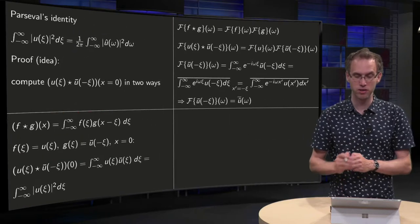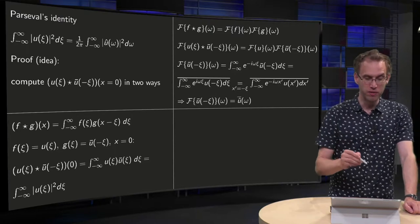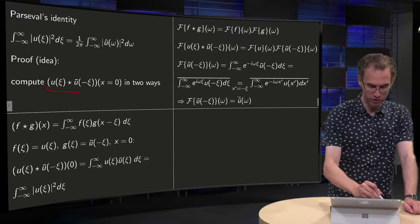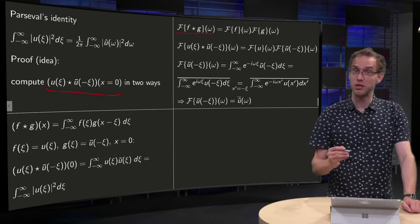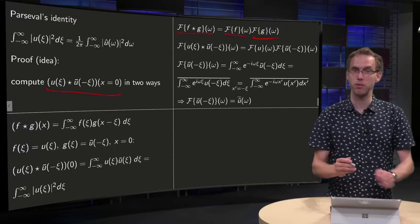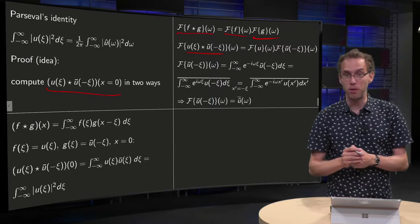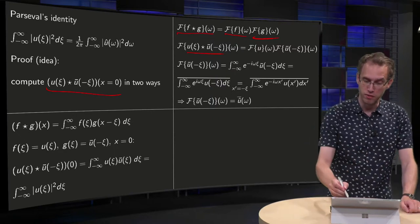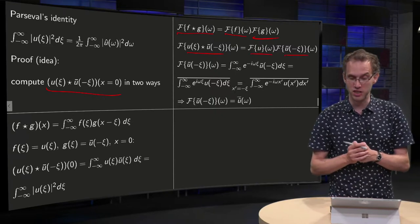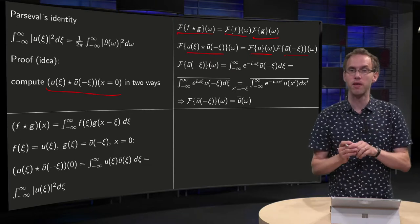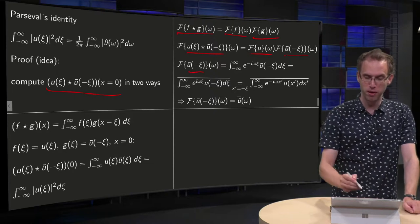Now for the right-hand side, we first compute the Fourier transform of this convolution. The Fourier transform of a convolution is very nice — it is the product of the Fourier transforms. So the Fourier transform of the convolution of u and ū(−ψ) is the Fourier transform of u times the Fourier transform of ū(−ψ). The first factor is easy, so let's focus on the second one.